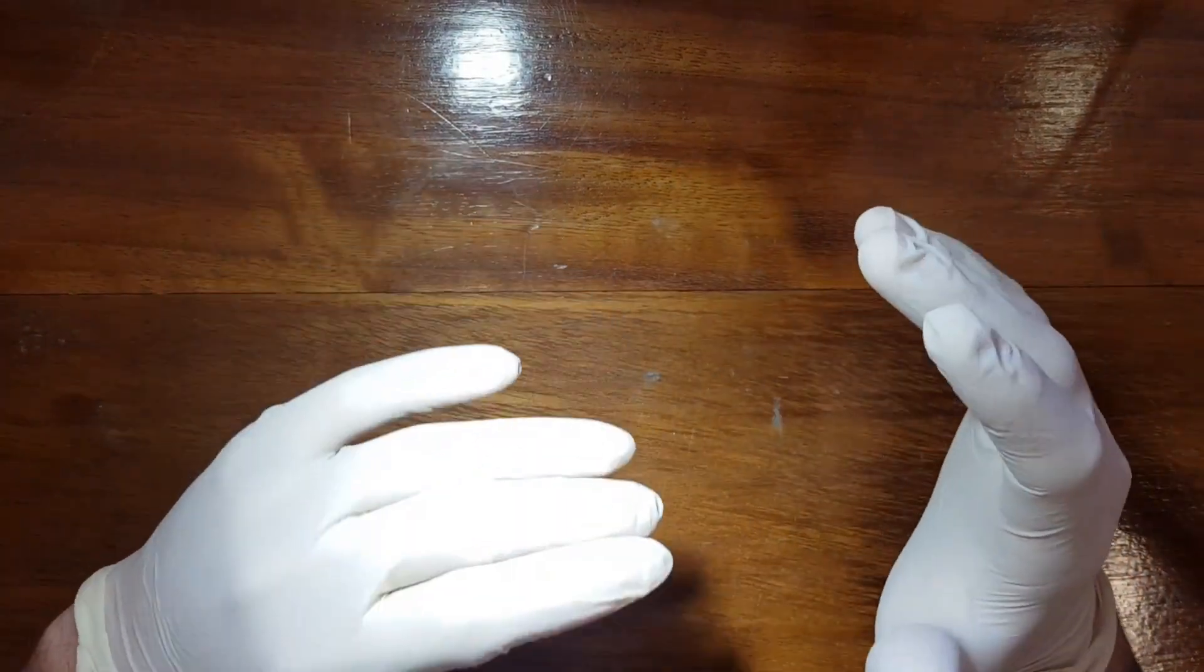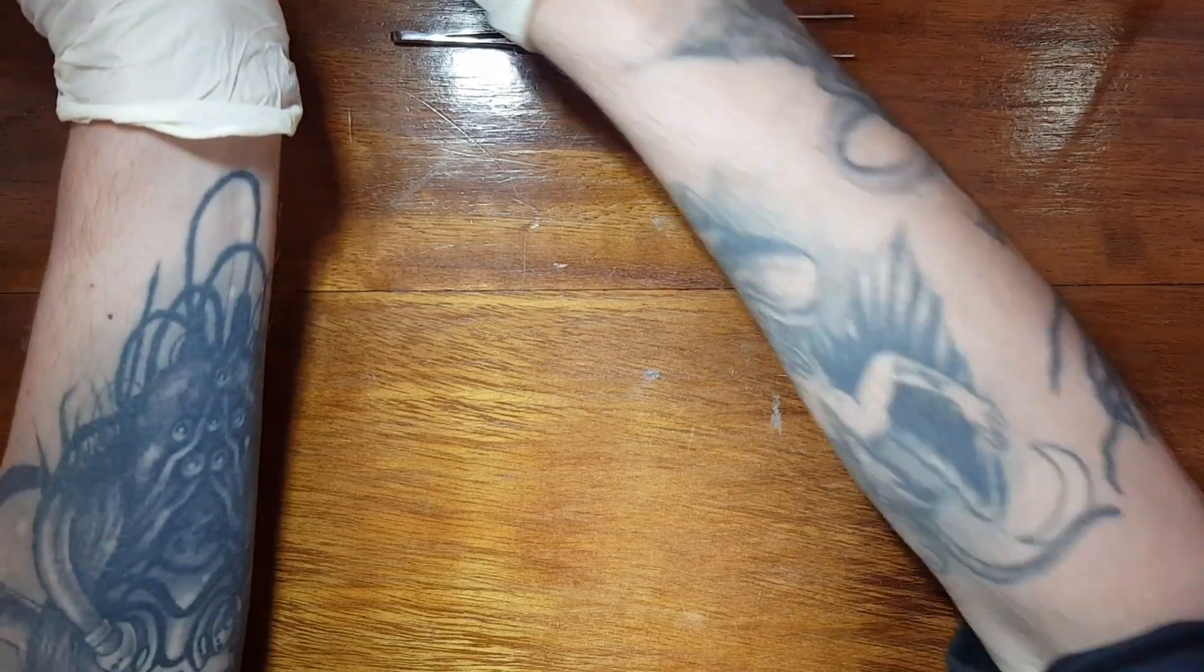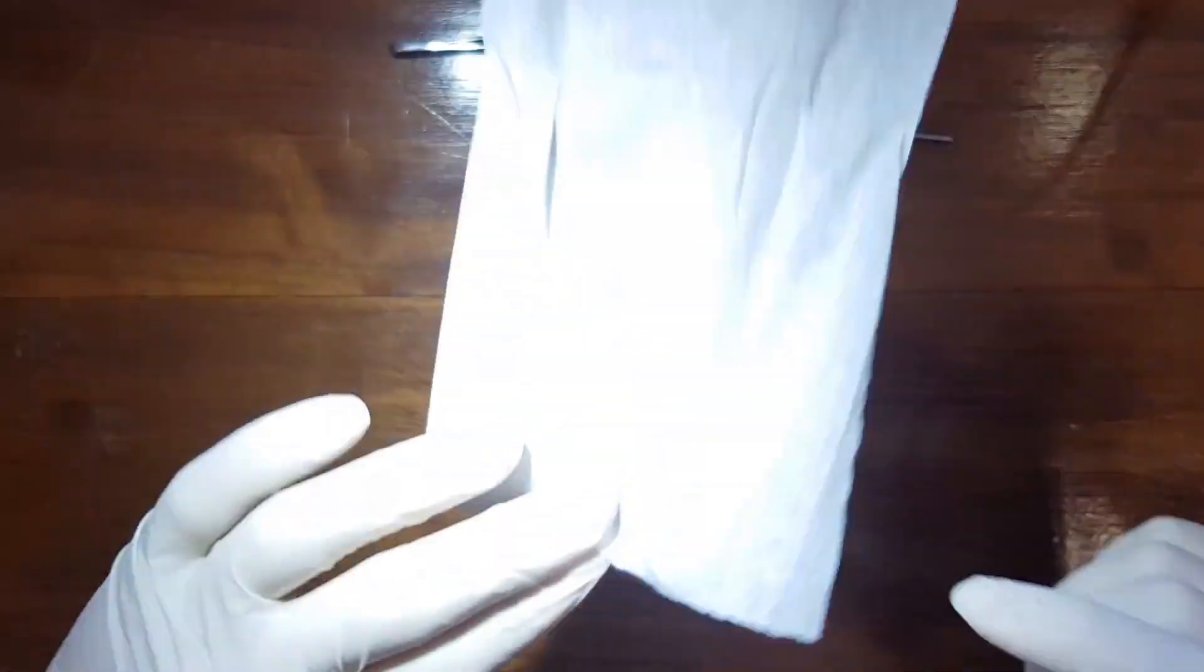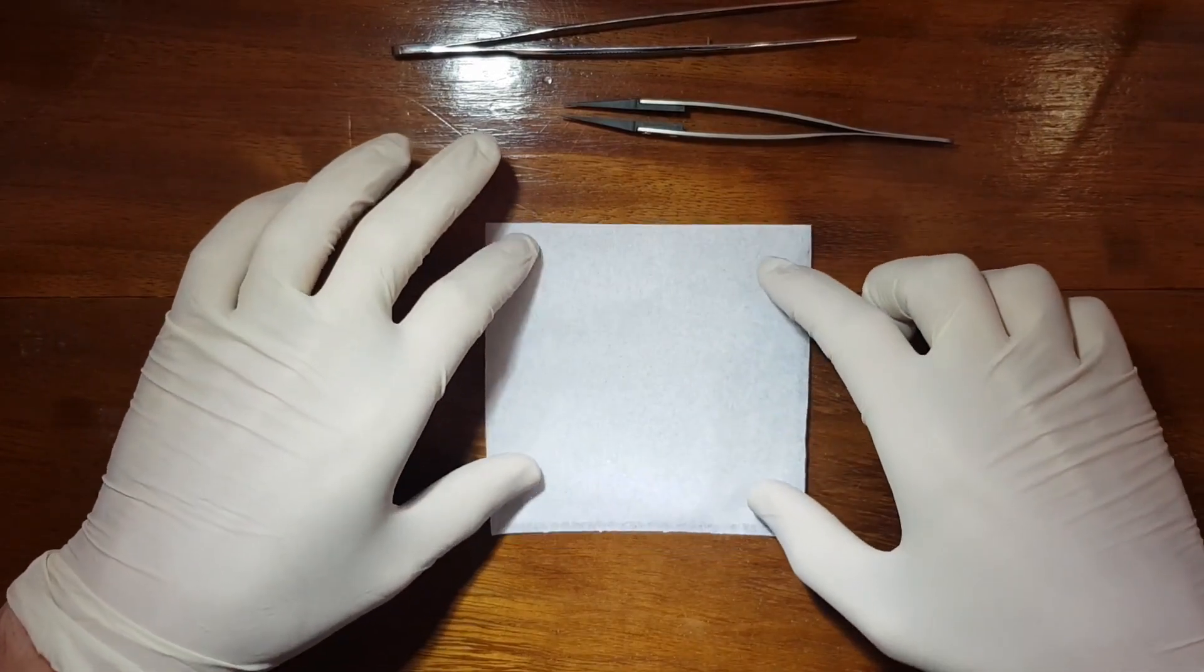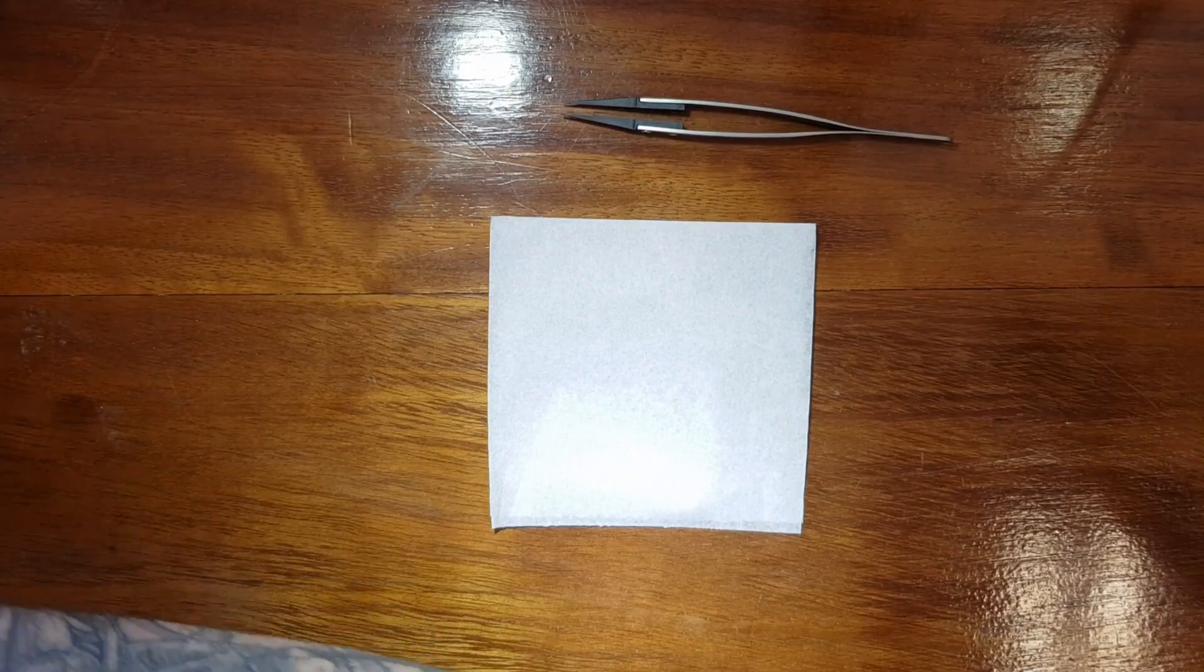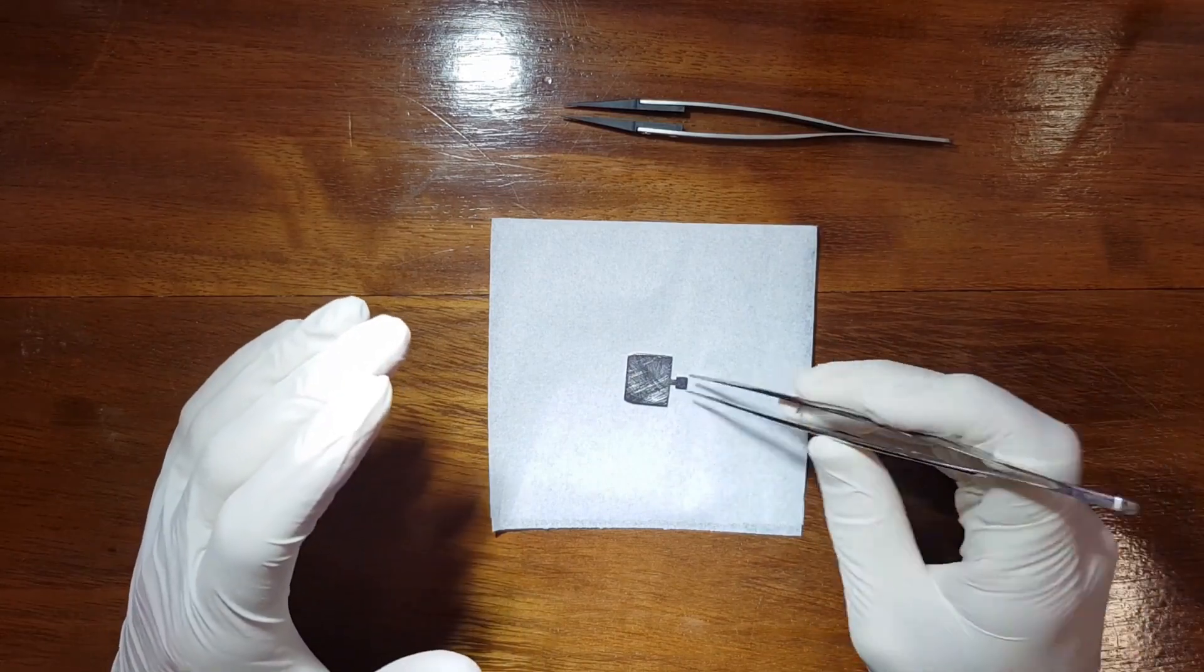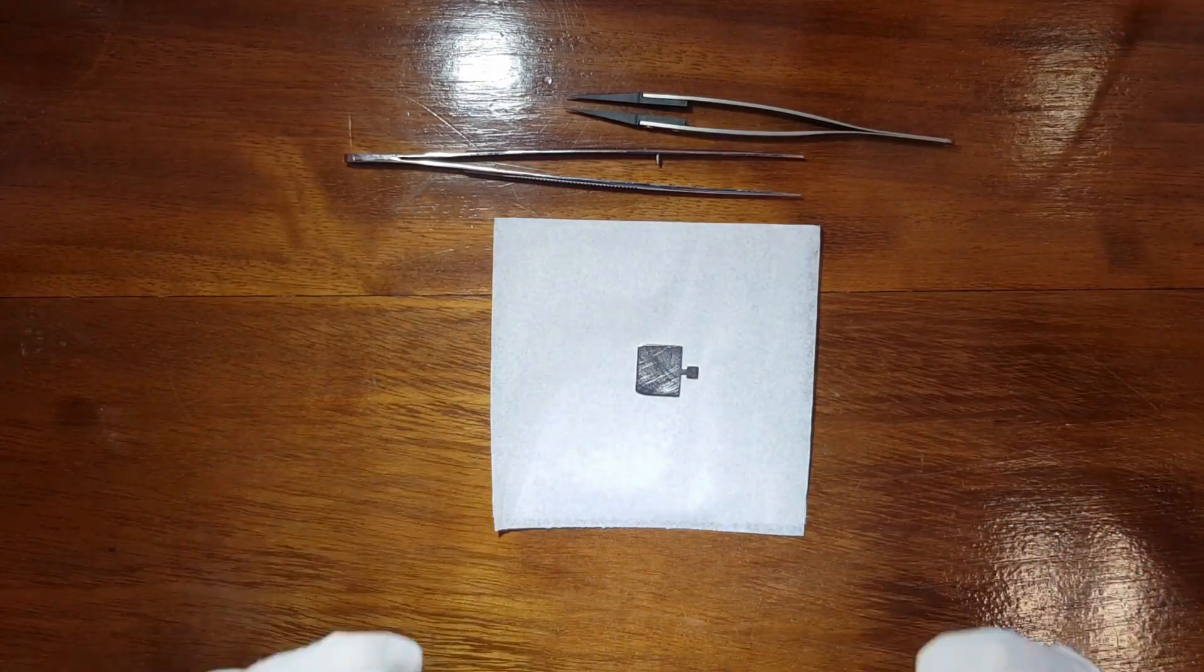Once we're gloved up, we'll need a few tools. First we need usual tweezers, polymer tip tweezers, a kim wipe so we can put our samples on something without touching the table surface. We'll also need a bunch of sample holders, which are these little things right here. These are laser cut stainless steel samples and we'll be mounting samples on there.